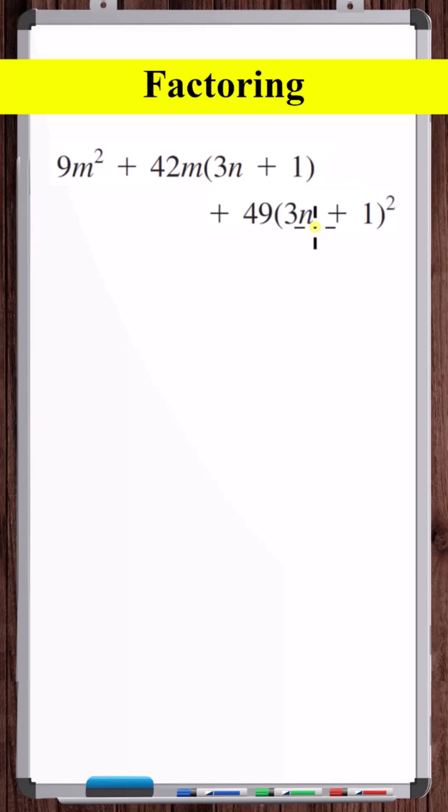If you look at this expression, notice that if we say u is equal to 3n plus 1, then what we get is a trinomial where the leading coefficient isn't 1. We factor these types by multiplying the leading coefficient with the third term.